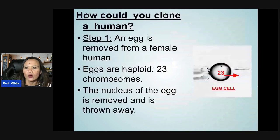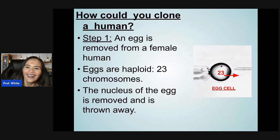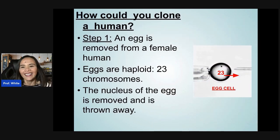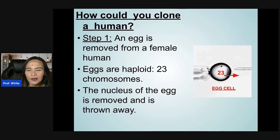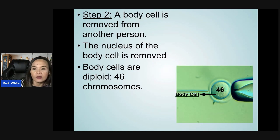How could you clone a human? In step one, the egg is removed from a female human. Eggs are haploid with 23 chromosomes. The nucleus of the egg is then removed and discarded.